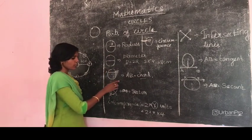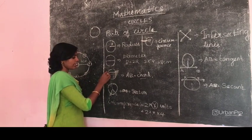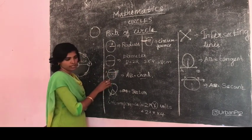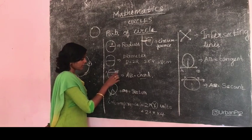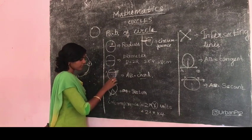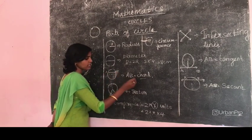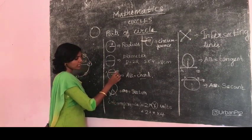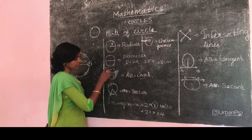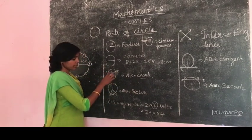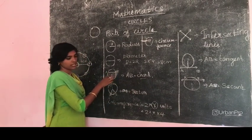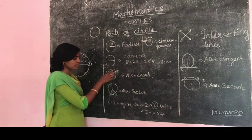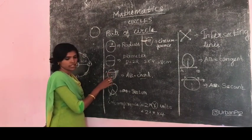Next one: chord. Chord is the length joining two points on the circumference of the circle. This AB is the two points in the circumference of the circle and AB is the chord of the circle. This smaller portion is the minor segment. The chord divides the circle into two segments. The small one is the minor segment and the larger one is the major segment.